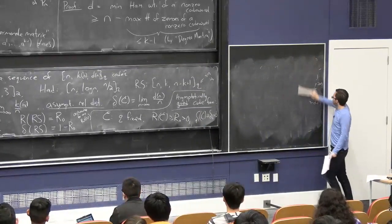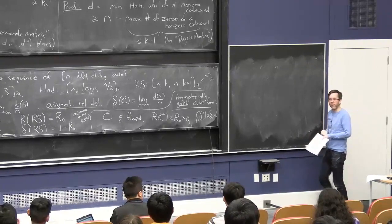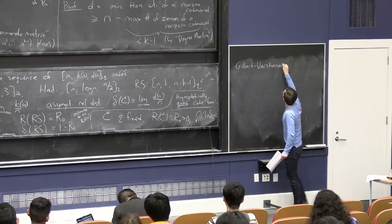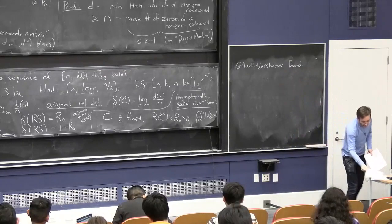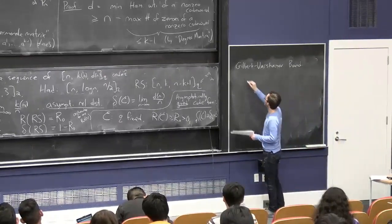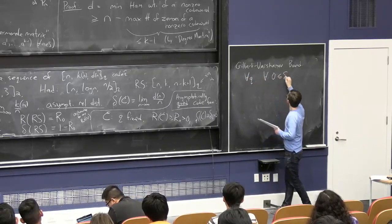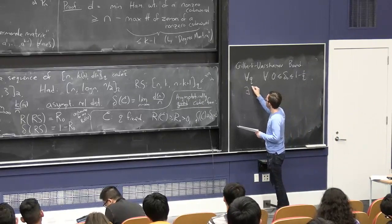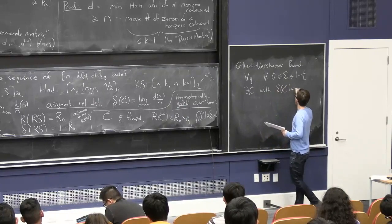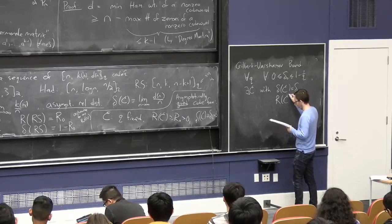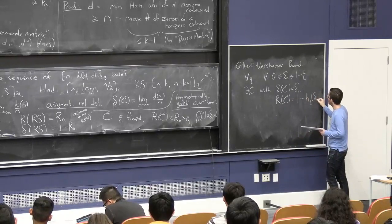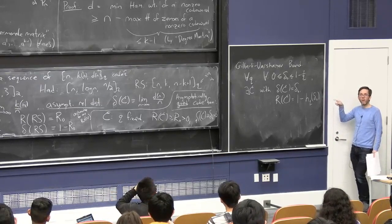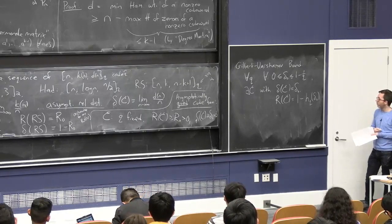So the first proofs of the fact that these codes exist were merely existential, and they were not practical at all. So there's something called the Gilbert-Varshamov bound. OK, and this Gilbert-Varshamov bound says that for all q and for all fixed numbers delta 0 that go up to 1 minus 1 over q, you can think in your head of q to be 2 if you want. There exists a code family C with relative minimum distance equal to this delta 0 and rate equal to 1 minus the q-ary entropy of delta 0.